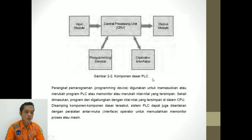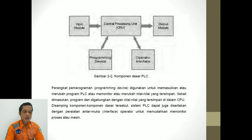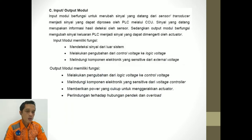Jadi, komponen dasar PLC itu ada input modul PLC, central processing unit, output modul, programming device, dan operator interface. Perangkat pemrograman atau programming device digunakan untuk memasukkan atau merubah program PLC atau memonitor atau merubah nilai-nilai yang tersimpan. Sekali dimasukkan, program digabungkan dengan nilai-nilai yang tersimpan dalam CPU. Sistem PLC ini dapat juga disertakan dengan peralatan antarmuka atau interface operator yang memudahkan memonitor proses atau mesin, yang sering disebut HMI, Human Machine Interface. Input ataupun output modul fungsinya untuk merubah sinyal yang datang dari sensor atau transducer menjadi sinyal yang dapat diproses oleh PLC melalui CPU.